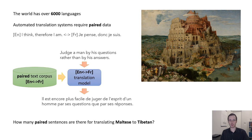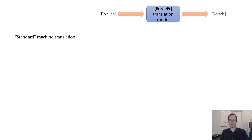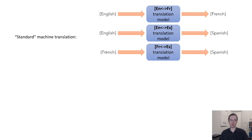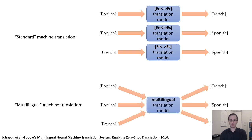I want to tell you about one of these solutions because it illustrates an important principle about deep learning. A standard machine translation system would train separate models for every pair of languages — English to French, English to Spanish, French to Spanish, and so forth. What these researchers wanted to do instead was build a multilingual machine translation model: a single model that can read a sentence in any language and translate it into any other desired language when given an initial input specifying the target language.